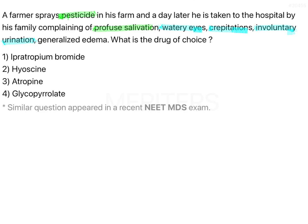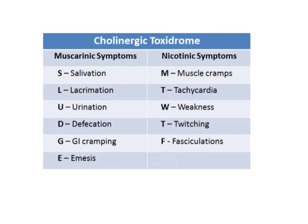Organophosphorus compounds are present in pesticides. These organophosphorous compounds cause over-stimulation of the nicotinic as well as the muscarinic receptors. When it comes to cholinergic toxidrome, we need to remember the signs and symptoms the patient will present.